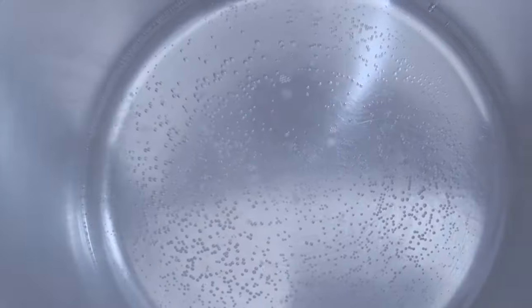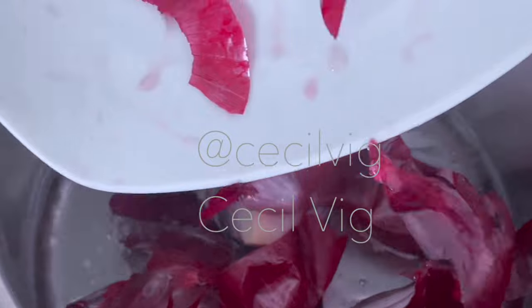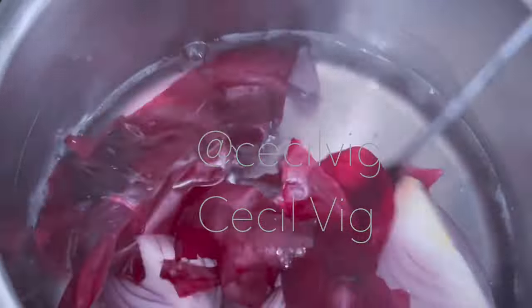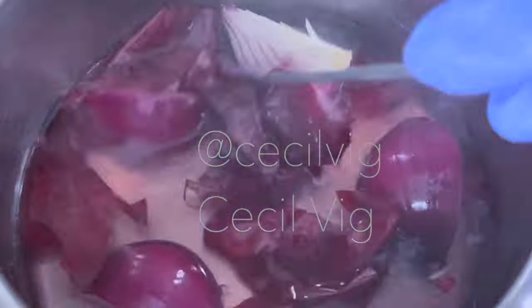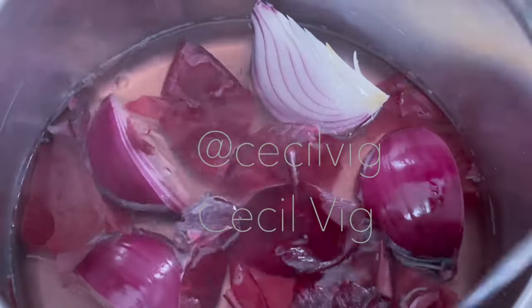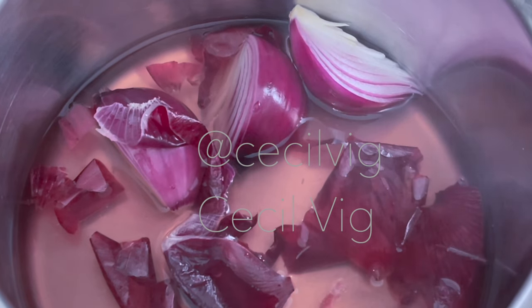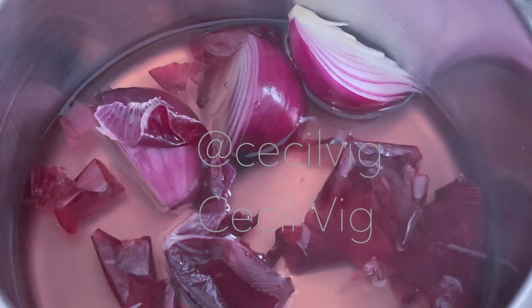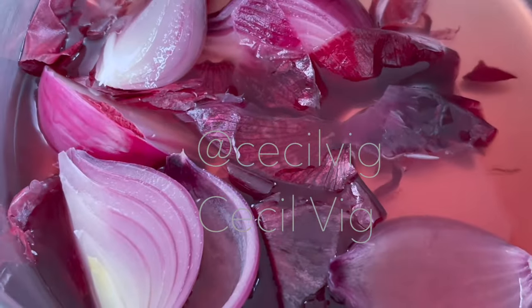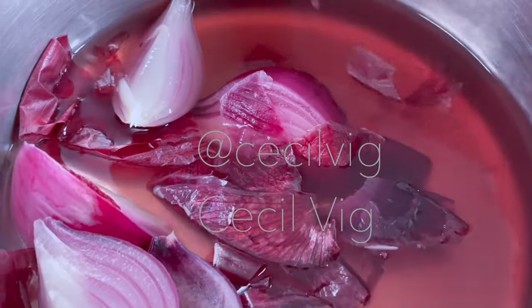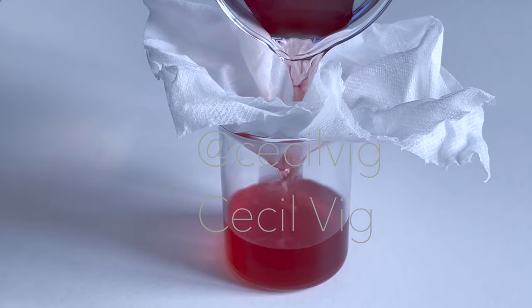When the water is about to boil, add the sliced onion and onion skin to the pot and simmer on low heat for about one minute while mixing. After one minute, remove the pot from the stove and set it aside for about 20 minutes. After 20 minutes, I filter it through a strainer, then through a cheesecloth.